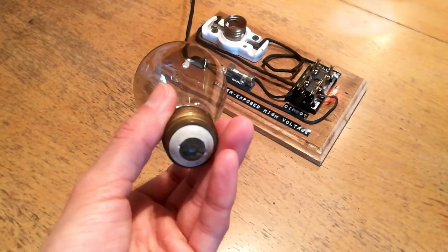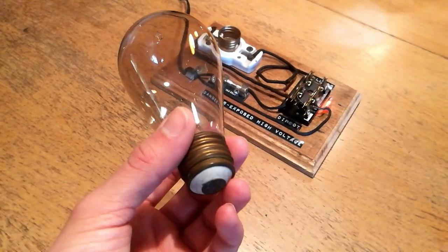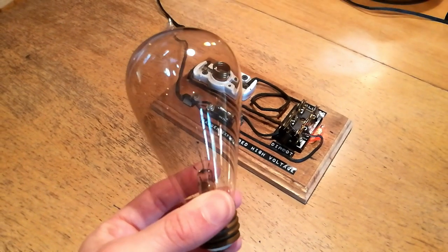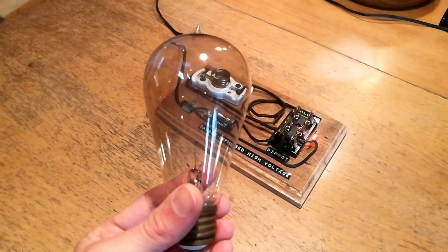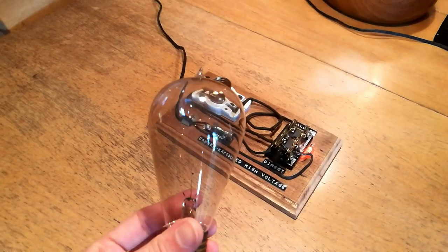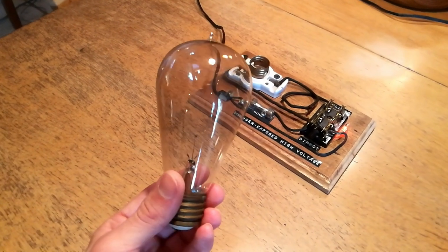You can see by the ceramic or porcelain base on this that it's likely earlier than 1910, most likely even earlier than 1905, which puts this bulb as being at least 110 years old, possibly 120 years old. Now you can see it has some hours on it already because the inside of the glass is quite dark.